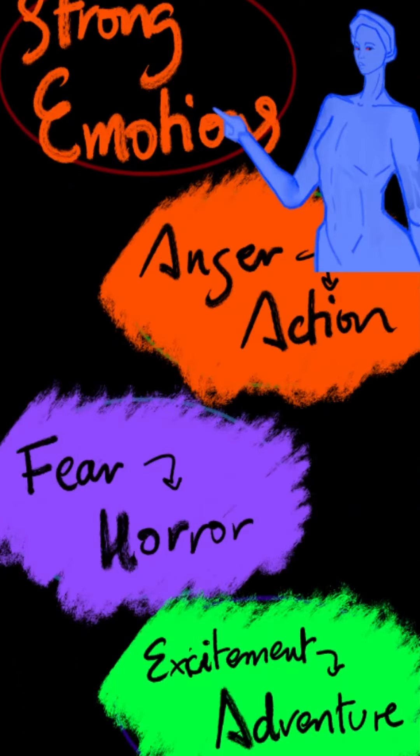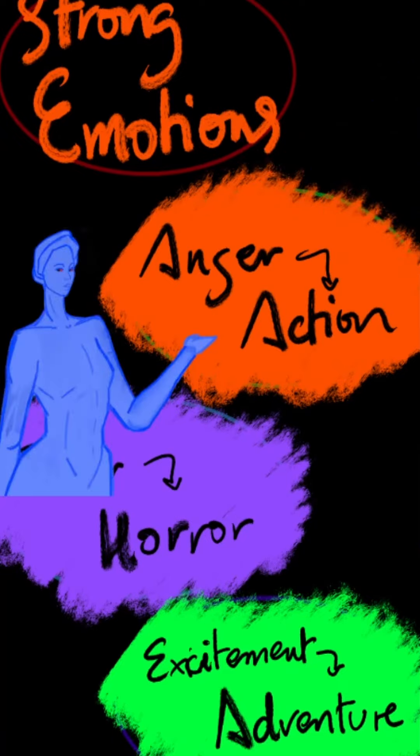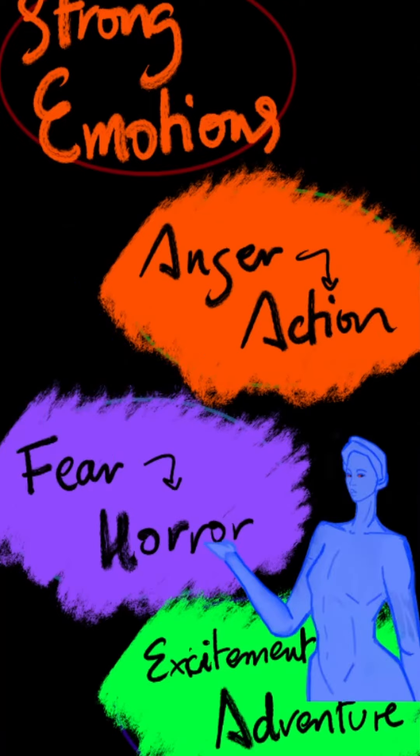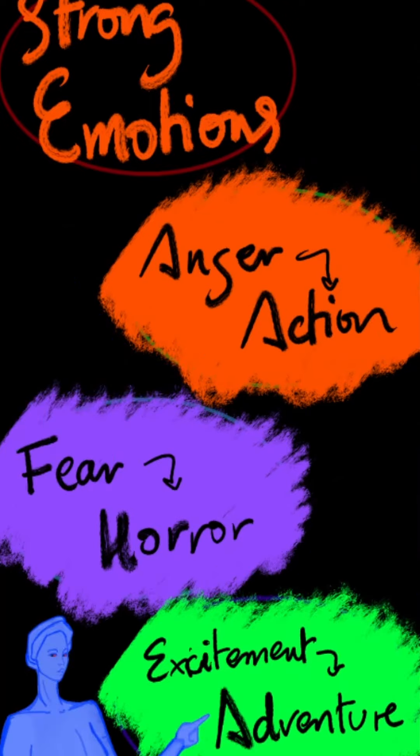As target emotion is the crux of genre selection, genre and emotion will be classified between strong emotions and deep emotions. Strong emotions include anger and courage, which refer to the action genre; fear and terror, which refer to the horror genre; and excitement, which corresponds to the adventure genre.